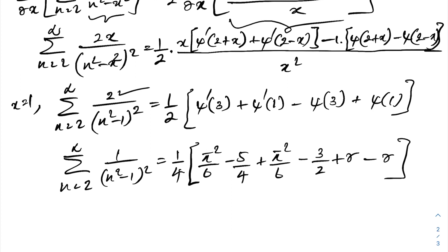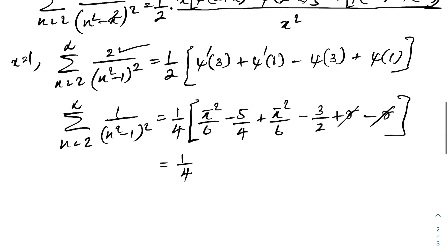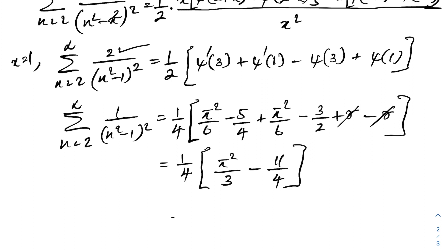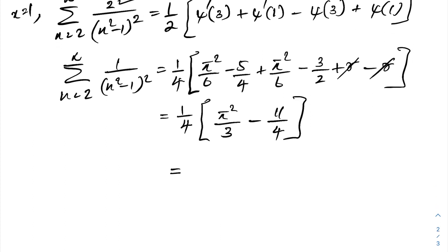Simplifying: the gamma terms cancel. We have 1/4 times [π²/6 + π²/6 − 5/4 − 3/2], which is 1/4 times [2π²/6 − 11/4] = 1/4 times [π²/3 − 11/4]. Multiplying through: π²/12 minus 11/16. This is the answer for our sum from n=2 to infinity of 1 over (n² minus 1)². Thank you for watching.